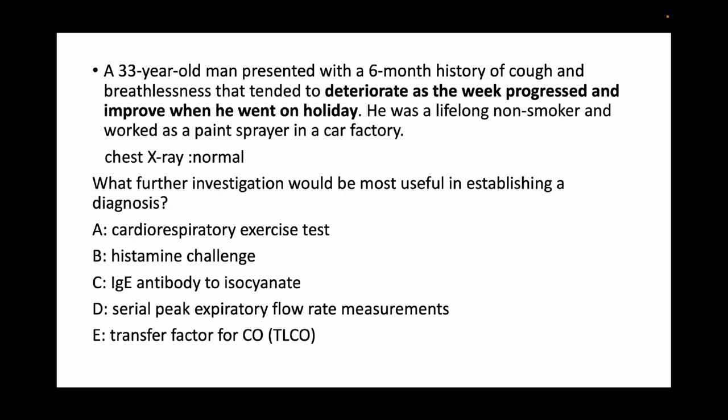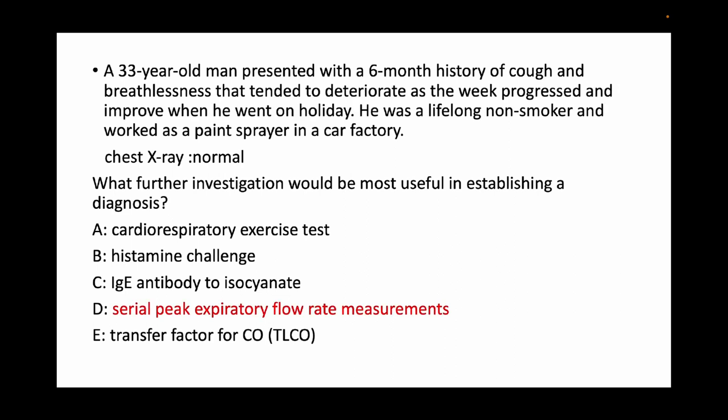Let's look at an example from the respiratory system. A 33-year-old man has symptoms of cough and breathlessness which deteriorate over the week and improve when he goes on holiday. This question tests your knowledge about occupational asthma. The investigation most helpful in establishing a diagnosis is serial peak flow rate measurements — to check the flow rate at work and when he is not at work, and compare whether there is an improvement in the flow rates when the individual is off work. Immediately identify the pointers, recognize the pattern, understand the diagnosis, look at what the question is asking, go through the options quickly, and select the correct option.